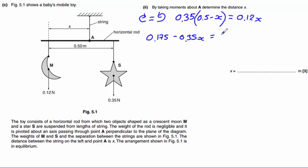And that's going to be equal to 0.12x. So we can again rearrange this. We will get 0.175 equals 0.12x plus 0.35x. Which equals 0.47x.